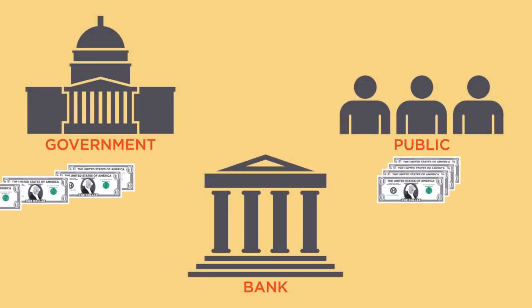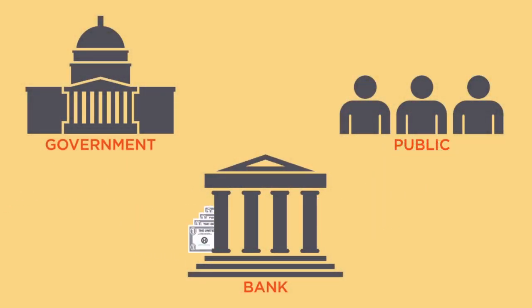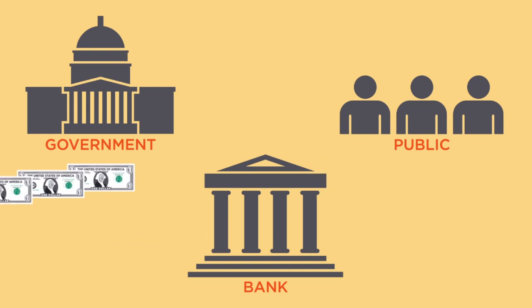When people see that they can go and get their money, and that there's no possibility that the bank is going to run out of money, the panic subsides. Then the short-term loans can be repaid to the government. And in this way, a fiat money system — an elastic money supply — can help mitigate or even eliminate the possibility of a bank run or a banking crisis.